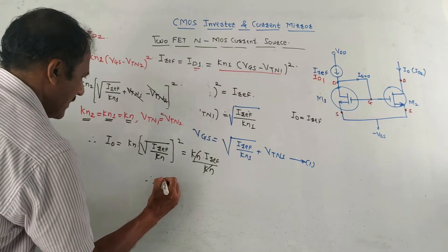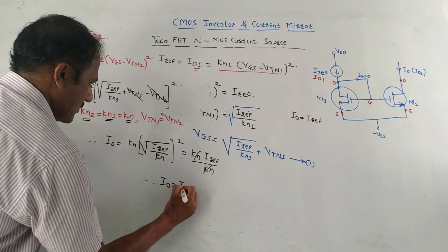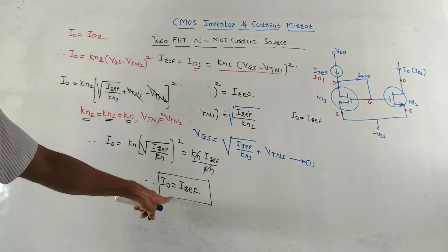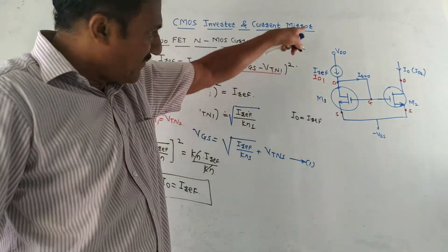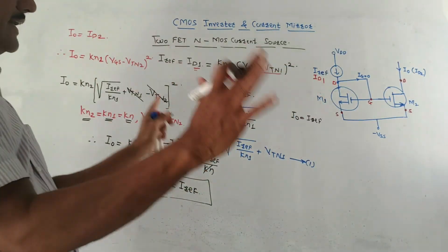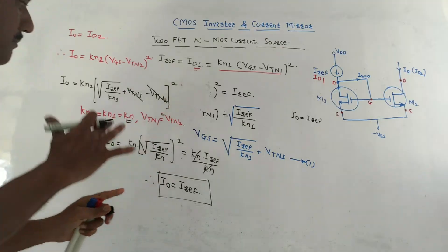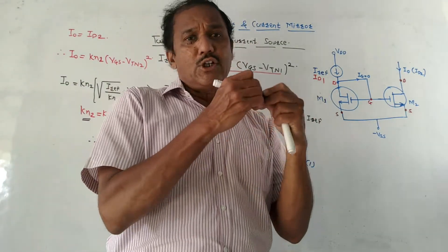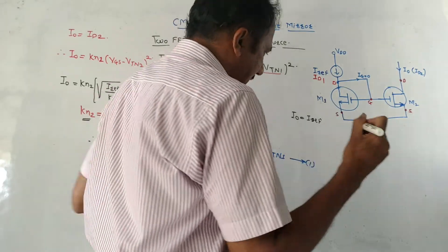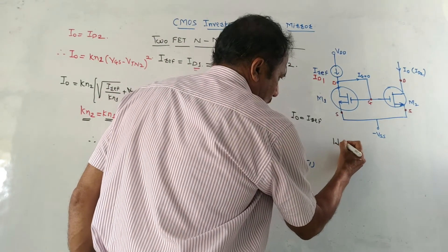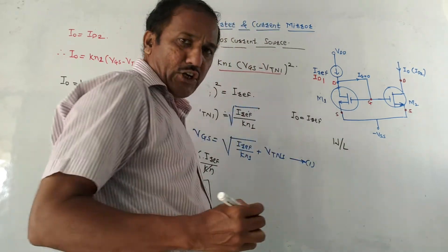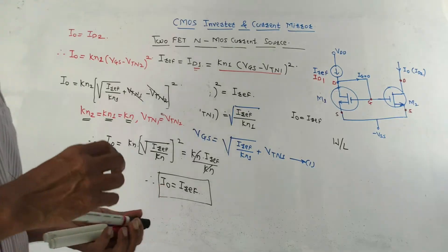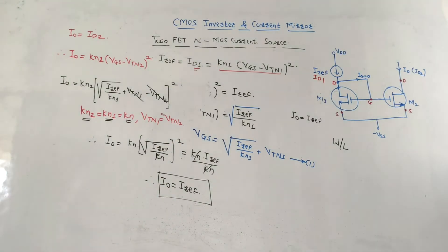So I0 equals I_reference — the output current is the same as the reference or input current. The circuit acts as a current mirror. An important note: if you want this circuit to act as a current mirror, the width-to-length ratio (W/L ratio) of the two transistors must be the same — only then will this circuit work as a current mirror.